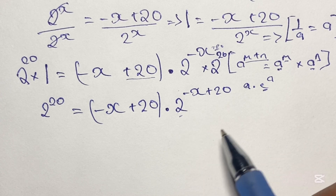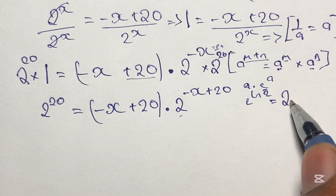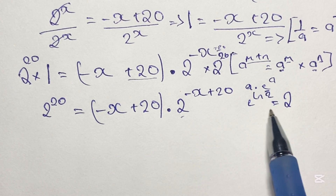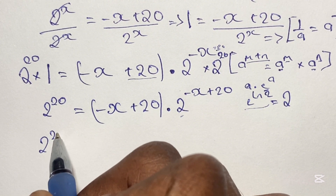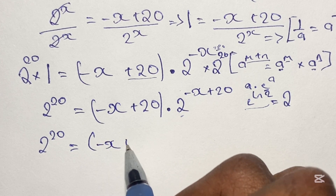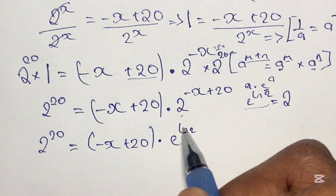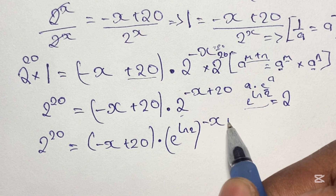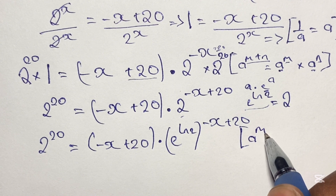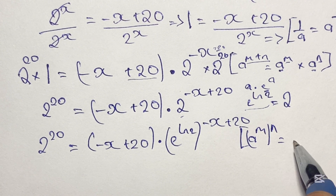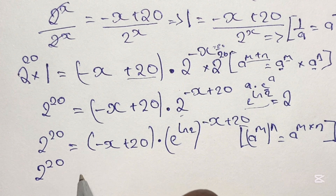But we need the e in our equation. We can write 2 in terms of e as e to the power of ln 2, since e to the power of ln 2 equals 2. So we interchange the 2 in our equation with e to the power of ln 2. Then, using the law of indices where a to the power of m, raised to the power of n, equals a to the power of m times n, we rewrite the equation accordingly.